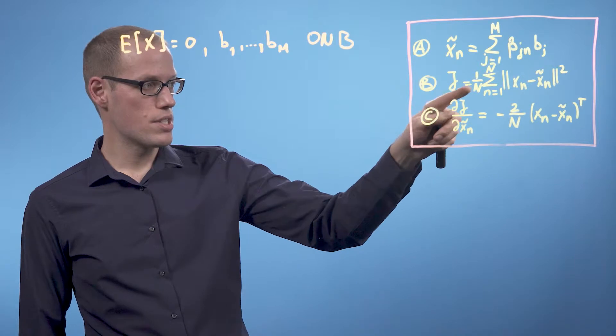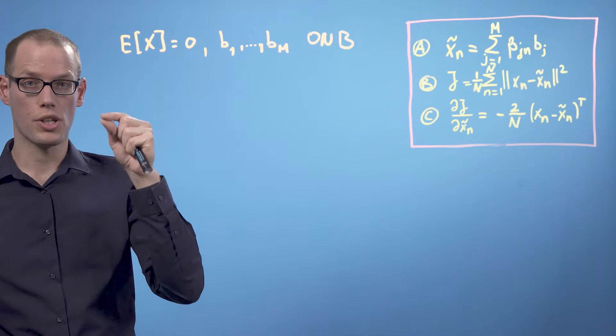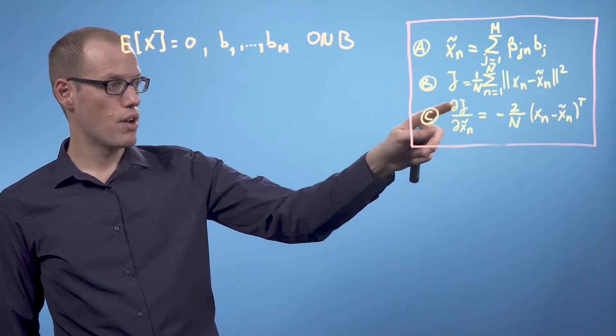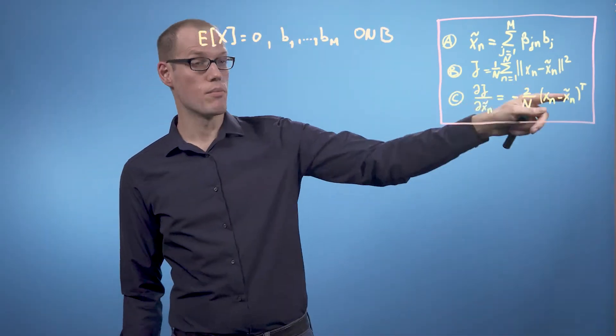Our loss function is the average squared reconstruction error between our original data point and the projection and the partial derivative of our loss function with respect to xn tilde is given by this expression.